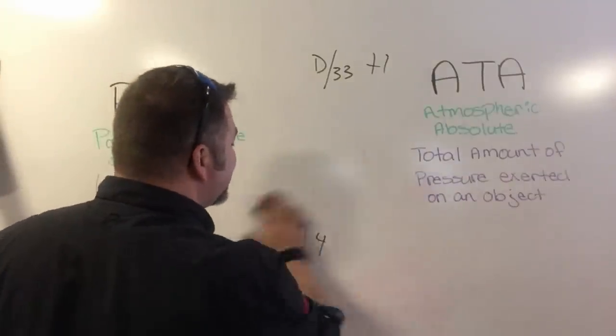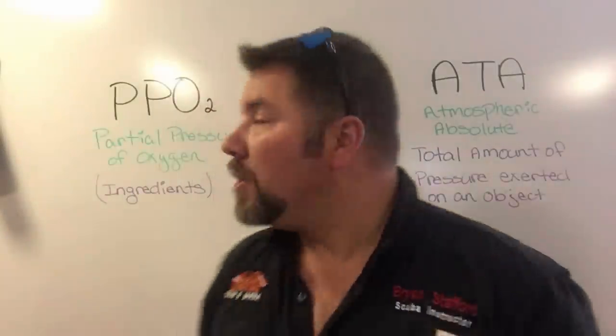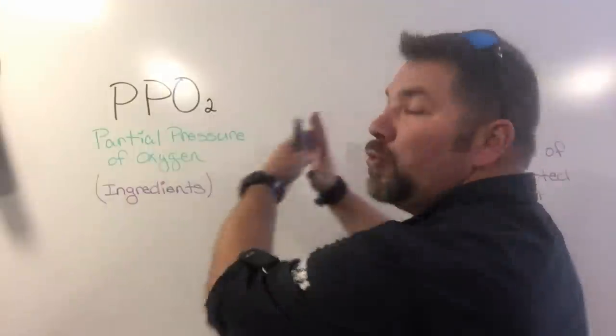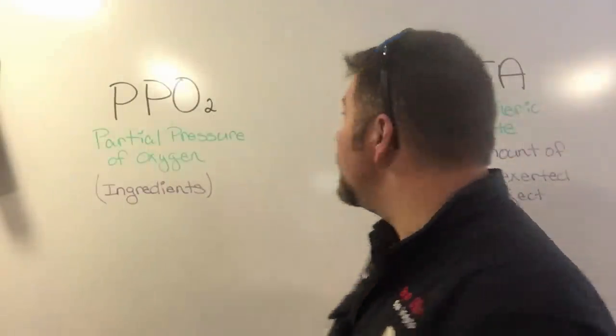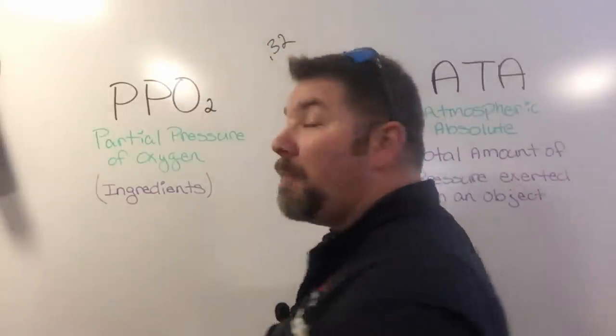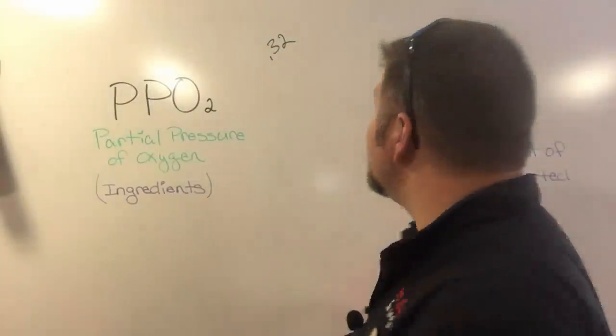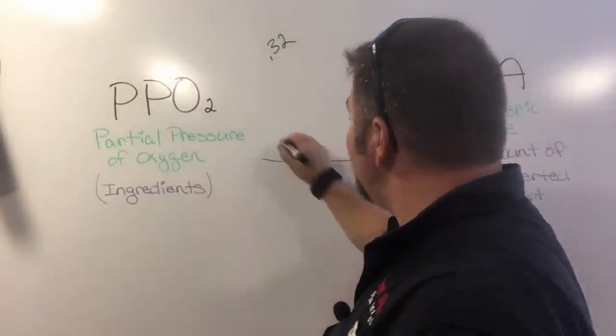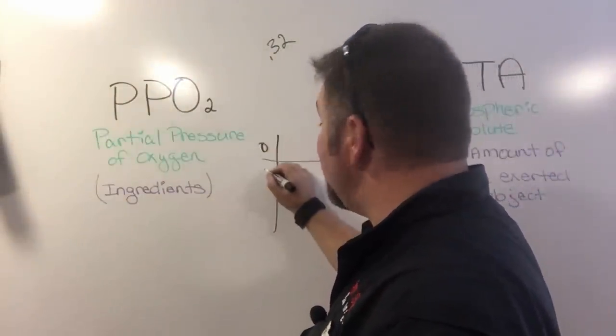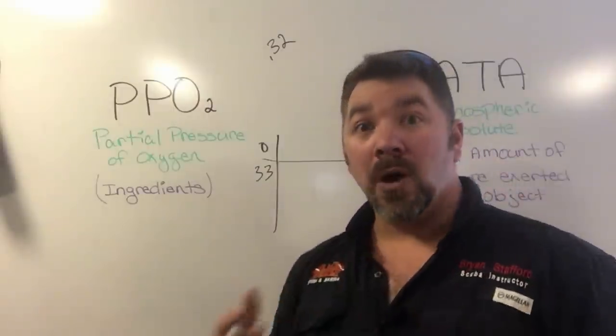But that's all ATA is—simply the total amount of pressure exerted on your body. So how do these two work together in a nitrox diving situation? Let's take nitrox 32 percent. I'm just going to simply write 0.32 up here because that's going to be the blend we're using.